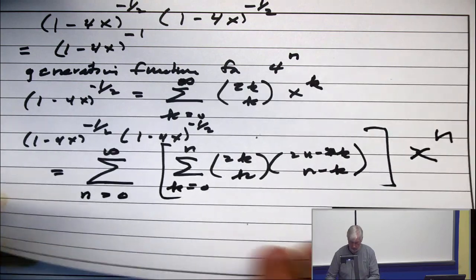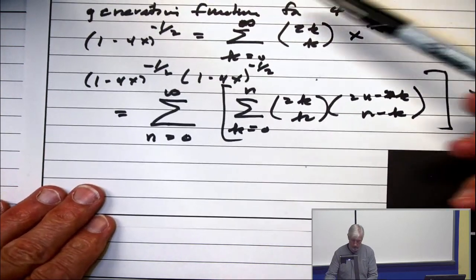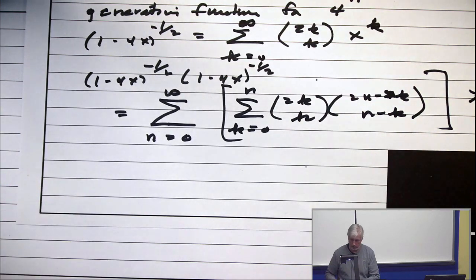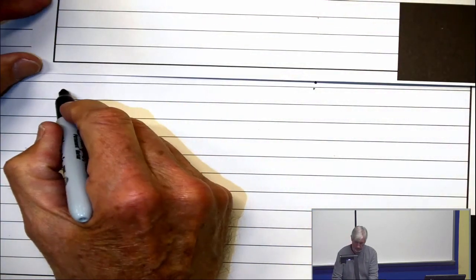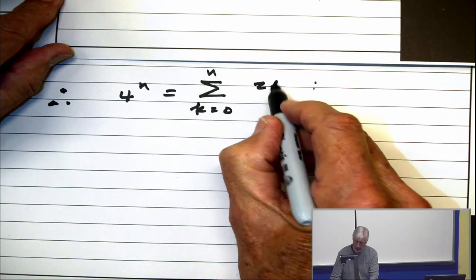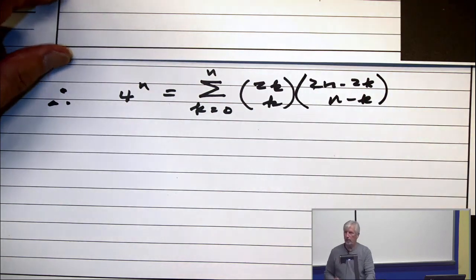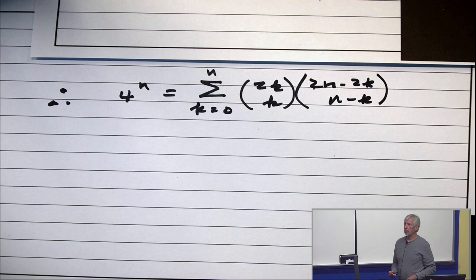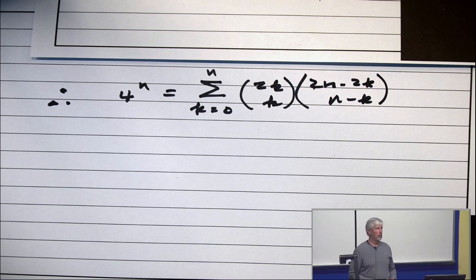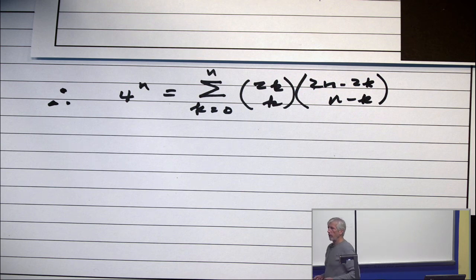And, therefore, 4 to the n is the coefficient, and that's the coefficient. Therefore, 4 to the n is equal, the summation, k equals 0 to n, of 2k choose k times 2n minus 2k, choose n minus k. That's calculus. Try to prove that without calculus. We proved it by writing the Taylor series expansion two different ways. But you know from calculus that the coefficients in the Taylor series expansion are unique.